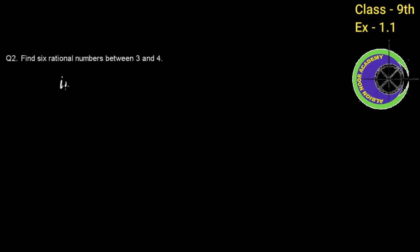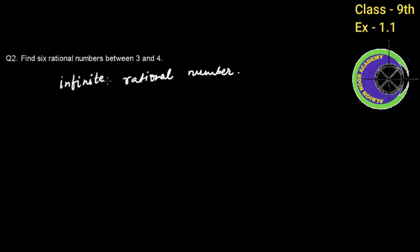We can write infinite rational numbers between any two numbers. Since we need to write 6, we will add one to the count — that is, we will multiply by 7.